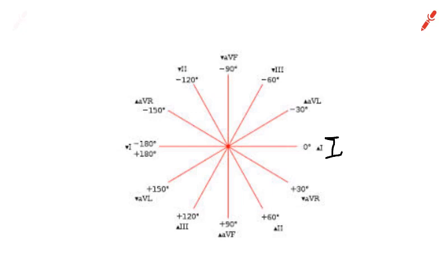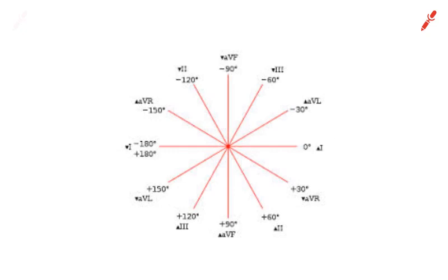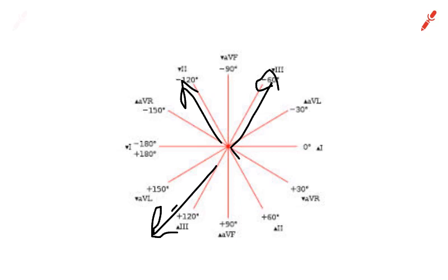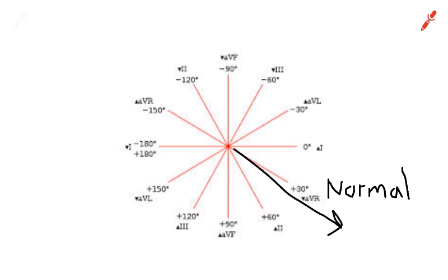Since Lead 1 is positive, that means the angle must be going towards Lead 1, because if it's going towards an angle, it's a positive deflection. So it must be going somewhere heading towards 0 degrees. Because if it's going away from Lead 1, then Lead 1 would be negative. AVF is also positive, so it has to be going towards AVF — either down or somewhat down. Where both AVF and Lead 1 are positive is right here — this is normal axis deviation.